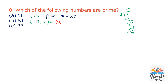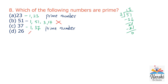C: 37. The factors of 37 are 1 and 37, so it is a prime number. D: 26. The number 26 is an even number. We know that there is only one even prime number, which is 2. All remaining even numbers are composite numbers, so 26 is not a prime number.